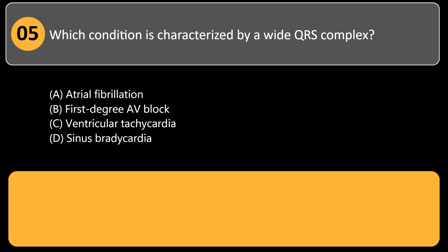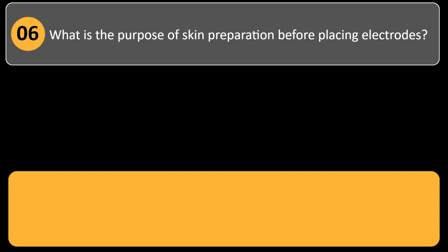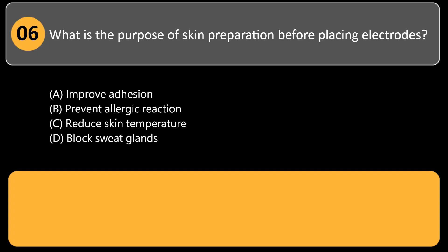Which condition is characterized by a wide QRS complex? A. Atrial fibrillation. B. First-degree AV block. C. Ventricular tachycardia. D. Sinus bradycardia. Answer: C. A wide QRS complex typically indicates that the impulse originates in the ventricles, as seen in ventricular tachycardia.